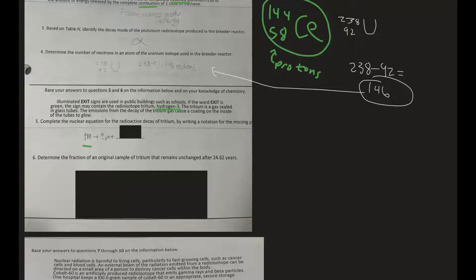On the left side we have a mass of 3. On the right side it's 0, because the electron is negligible in mass. So we write a 3 on top. On the bottom, we have 1 on the left side and negative 1 on the right side. To balance that out, we need a 2. What has two protons? That's going to be helium. So that is the notation for that part.